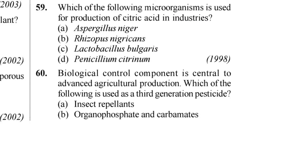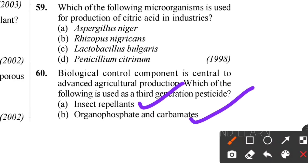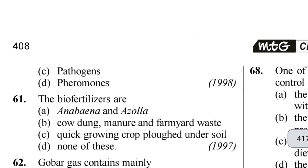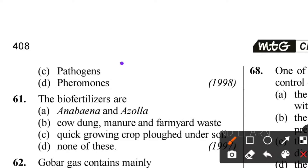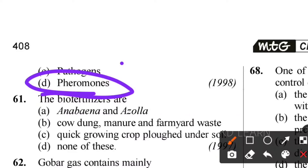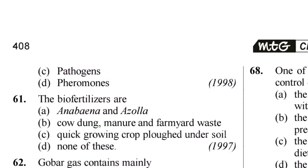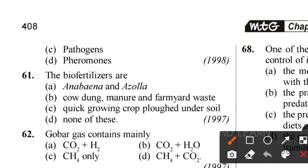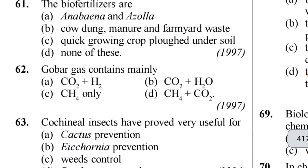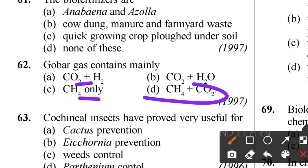Sixtieth question: biological control central to advanced agricultural production - which is the third generation pesticide? Insect repellents and organophosphates are not correct. The answer is pheromones. Pheromones are volatile chemicals; for example, lepidopteran pheromones are used as pesticides with high volatile properties. Sixty-first question: bio-fertilizers include Anabaena and Azolla. Sixty-second question: gobar gas contains mainly CO2 and CH4 - option D is the correct answer.